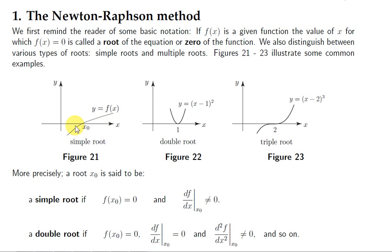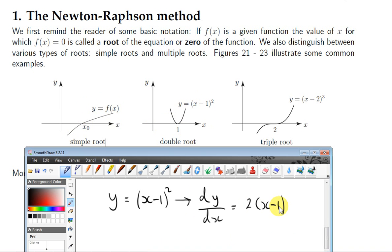In this situation we have what's called a double root. This is the graph of y = (x-1)². When x is 1, you can see that y is 0. Now if we look at the first derivative at that root, we have a horizontal line, so the first derivative is 0. We can easily verify that: if we work out the first derivative at x = 1, we'll end up with 0.